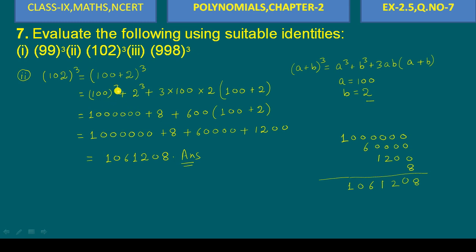Let us repeat: to find 102³, we write it as (100 + 2) whole cube. We use the identity (a + b)³ = a³ + b³ + 3ab(a + b), where a = 100 and b = 2. So we get 100³ plus 2³ plus 3 × 100 × 2 × (100 + 2).